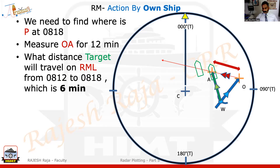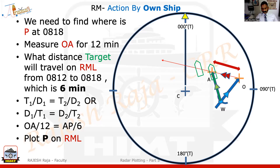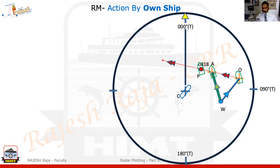From 0812 to 0818 is the next six minutes — where will the target be? I can use the ratio formula. OA was measured, it was done in 12 minutes. AP I want to know, and it should be done in six minutes. The target is still moving on the relative motion line, so all time should be taken on the relative motion line. Let us assume I got around 1.5 miles. So I'm going to plot that 1.5 miles from alpha and mark it on the original RML — and that will be my P at 0818. So till 0818, nothing has changed. I already have my predicted position at 0818.